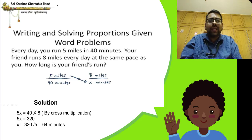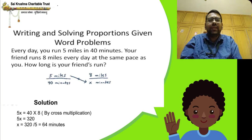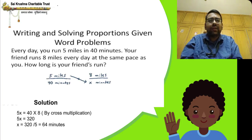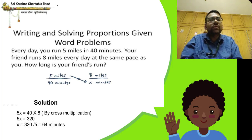Now do cross multiplication: 5 into x equals 5x, equals 40 into 8, which is 320. So 5x = 320. Divide both sides by 5, since 5 is the number attached to variable x. x = 320 / 5 = 64 minutes.